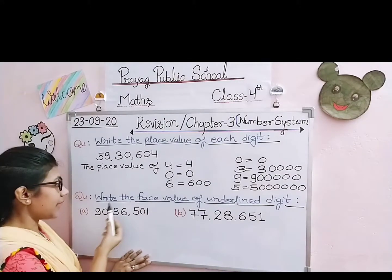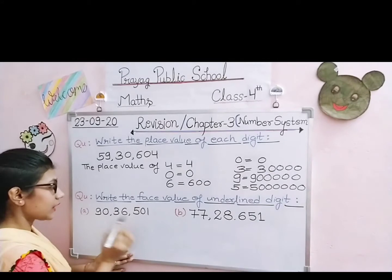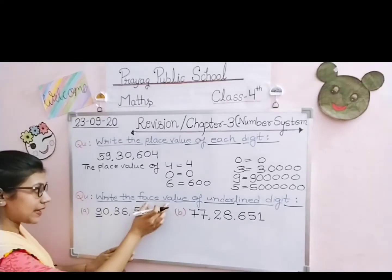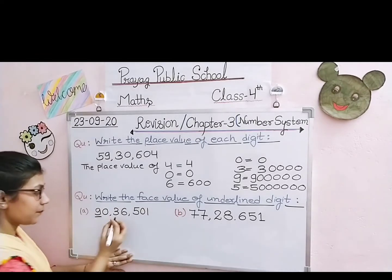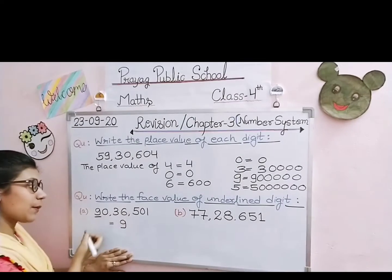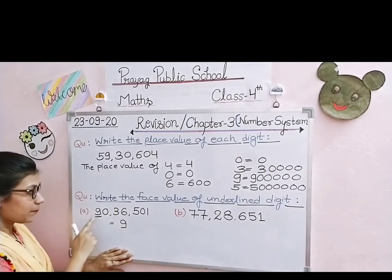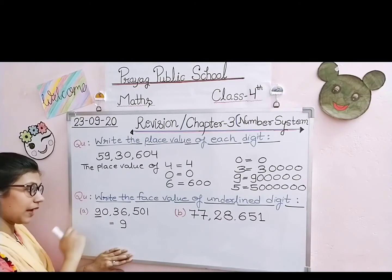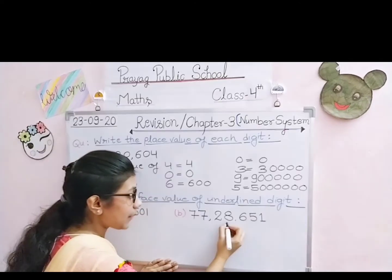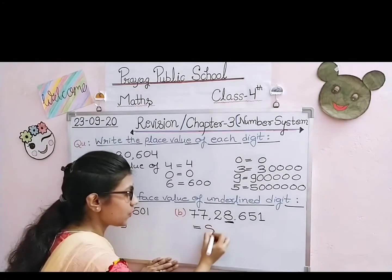Next type of question: write the face value of the underlined digit। अगर इस number में 9 को underline किया गया है, तो आप सिर्फ 9 की face value लिखोगे। Sentence लिखोगे: the face value of 9 is equal to 9। चाहे number कितना भी बड़ा हो, जो भी numeral होता है वो अपनी face value itself होता है। Question B: 77,28,651 में, अगर 8 की face value पूछी जाए, तो: the face value of 8 is equal to 8।